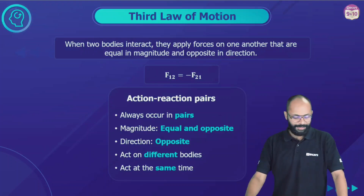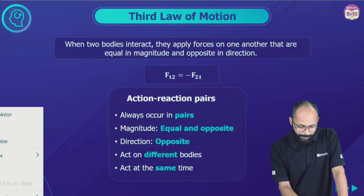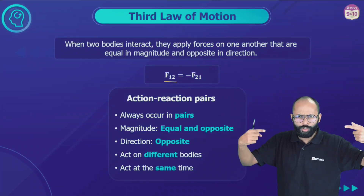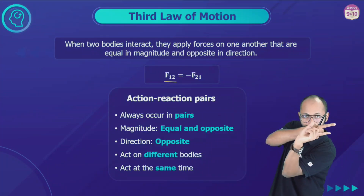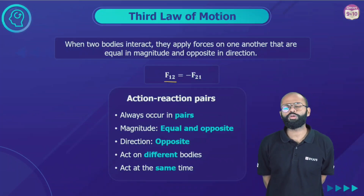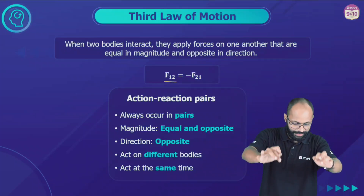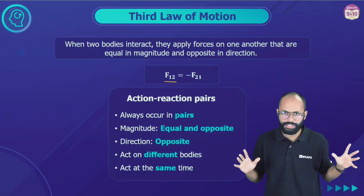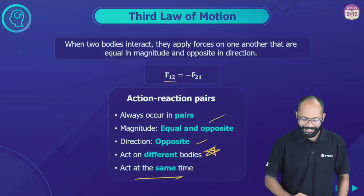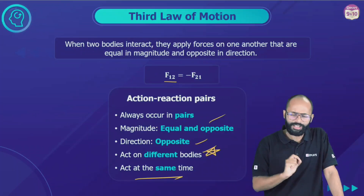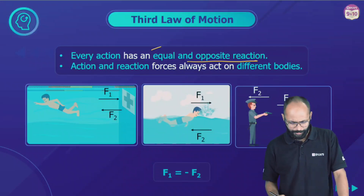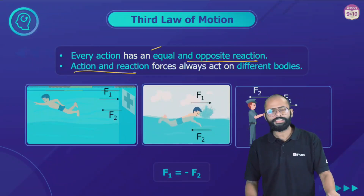If body A applies force F on body B, body B will apply force F on body A. Both forces are equal but opposite in direction, acting on different bodies — A on B and B on A. F₁₂ means force applied by 1 on 2. Force applied by 1 on 2 equals force applied by 2 on 1, but in the negative direction, because force is a vector quantity. Action and reaction forces always occur simultaneously — they occur in pairs, no one comes before or after. Magnitude equal, direction opposite, acting on different bodies at the same time.